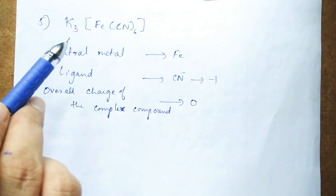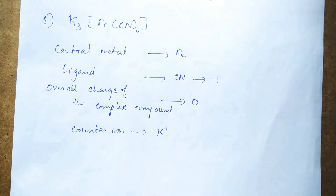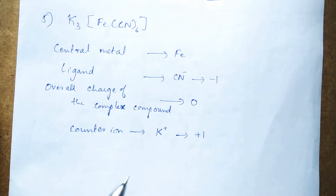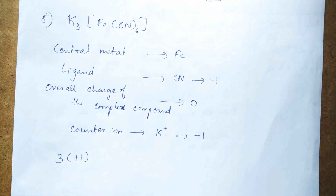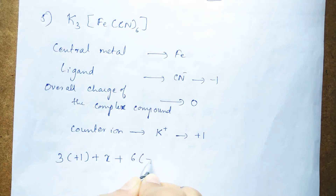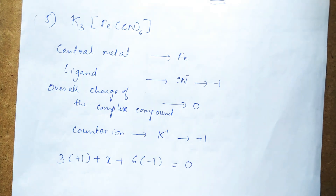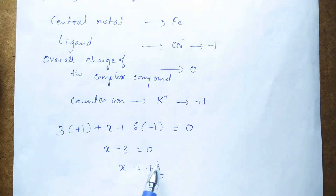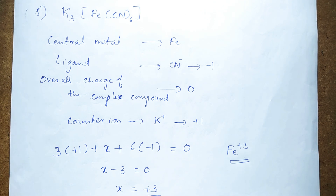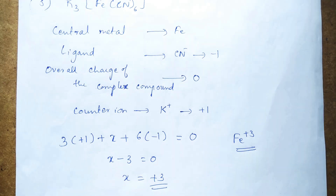Since potassium is present, the overall compound has zero charge. Potassium, an alkali metal (Group 1), always has an oxidation state of plus one. So: 3×(+1) + X + 6×(−1) = 0. This gives X − 3 = 0, so X = +3. Iron exists in the +3 oxidation state (ferric state) in this complex.